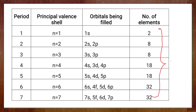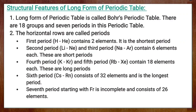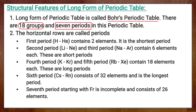These element counts — 2, 8, 8, 18, 18, 32, 32 — are the magic numbers, representing the intervals at which properties repeat. Now let's consider a few structural features of the long form of the periodic table, also called Bohr's periodic table. It has 18 groups and 7 periods. Periods are the horizontal rows of the periodic table, and we have 7 such horizontal rows in the modern periodic table.